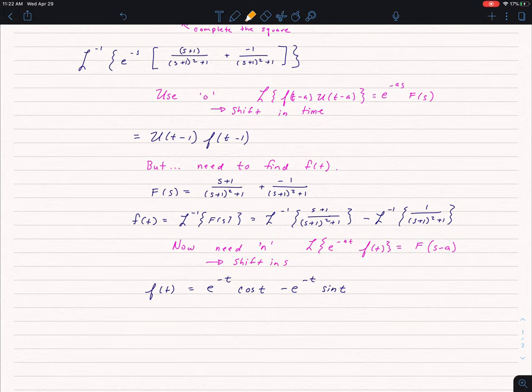So that is my f of t. I've taken care of the shift in s with that e to the negative t. But, if I recall, what I need is not f of t, I need f of t minus 1.